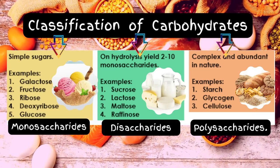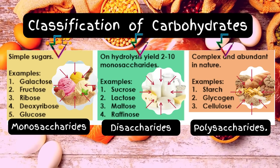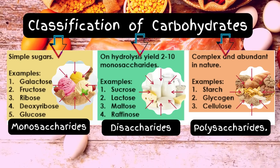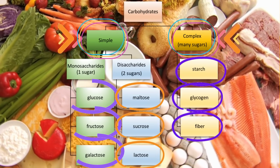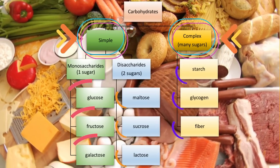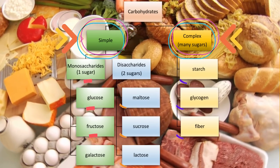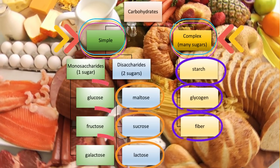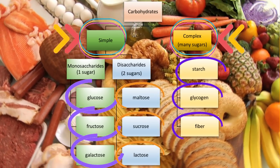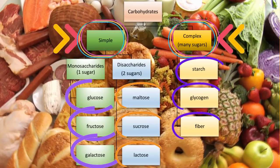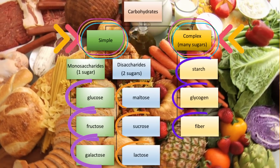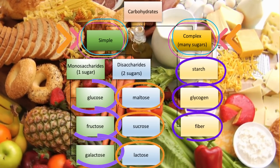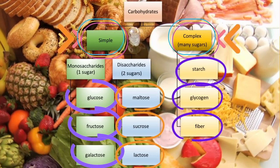Monosaccharides are simple sugars. On hydrolysis, disaccharides yield 2 to 10 monosaccharides. Polysaccharides are complex and abundant in nature. Therefore, carbohydrates may be simple or complex. If they are simple, they may be monosaccharides — 1 sugar — with examples like glucose, fructose, and galactose — or disaccharides — 2 sugars — with examples like maltose, sucrose, and lactose. But if they are complex in nature, they are known as polysaccharides — many sugars — with examples like starch, glycogen, and fibers.